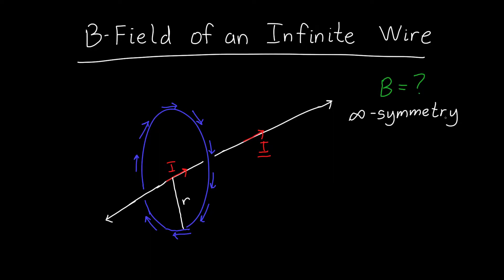Ampere's law is that the integral over some closed loop of the magnetic field dotted with dr, often called dl, is equal to mu naught times the current that penetrates through that loop or the surface that that loop makes.